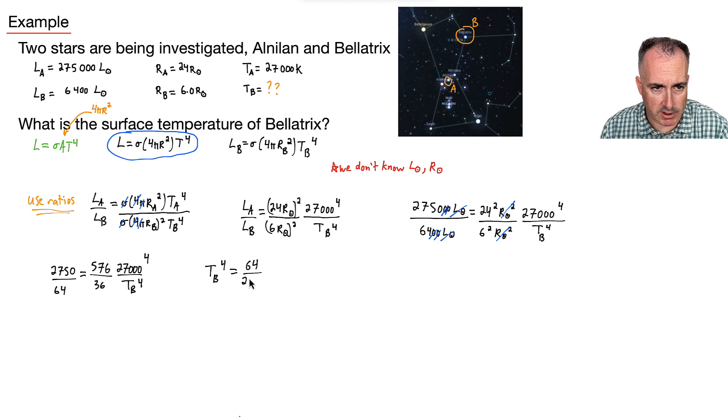I'll have a 2750 on the bottom. Don't forget, I still have this 576. All that over 36. All that times 27,000 to the fourth.